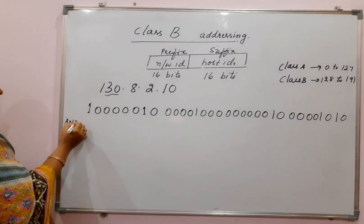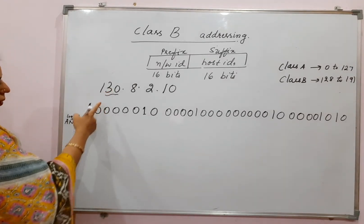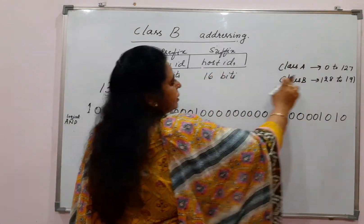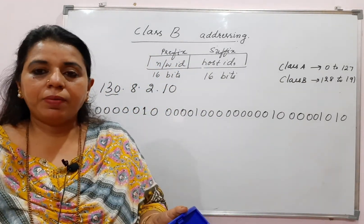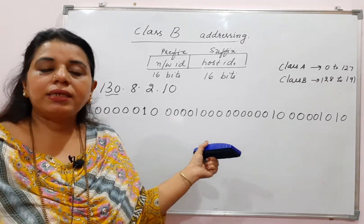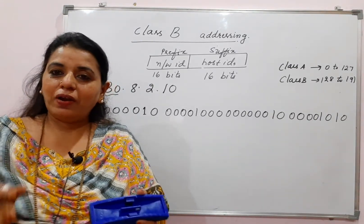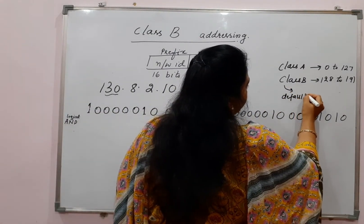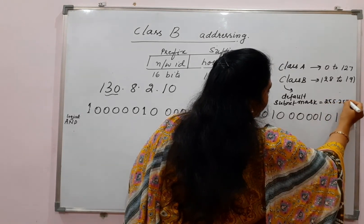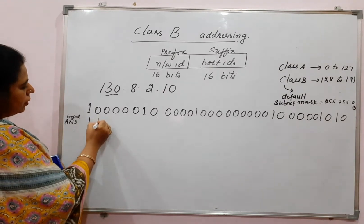To get the first address, you are going to perform a bitwise logical AND with the bits of the IP address and the bits of the subnet mask. The default subnet mask for Class B — since 16 bits are meant for the network ID, the first 2 octets will be 1s — is 255.255.0.0. Convert that default subnet mask into binary and perform the logical AND operation.